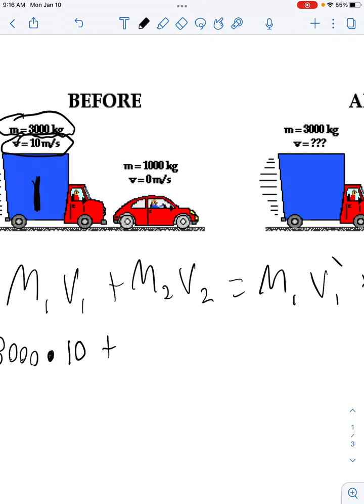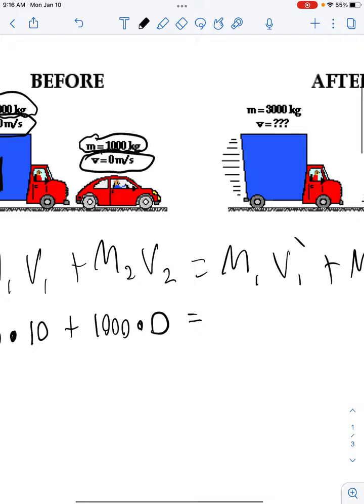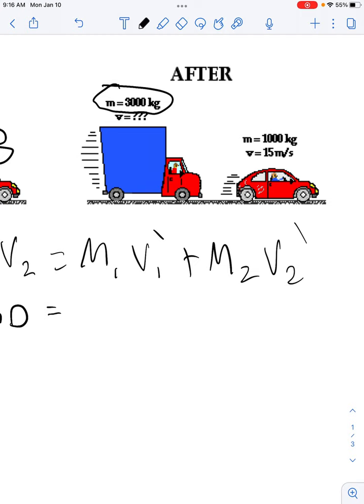Now we have the mass of object 2, which is the little red car, which weighs 1,000 kilograms. We've got to multiply by the velocity of object 2, which is 0. So I will put a 0 here. That's everything before the collision. Now that I write the equal sign, everything on this side will be what happens after the collision. The mass of the blue truck is still 3,000 kilograms. So the mass of object 1 is still 3,000. But this time, we don't know how fast it's going, so we're going to keep it as V1 prime. That's what we want to solve for.